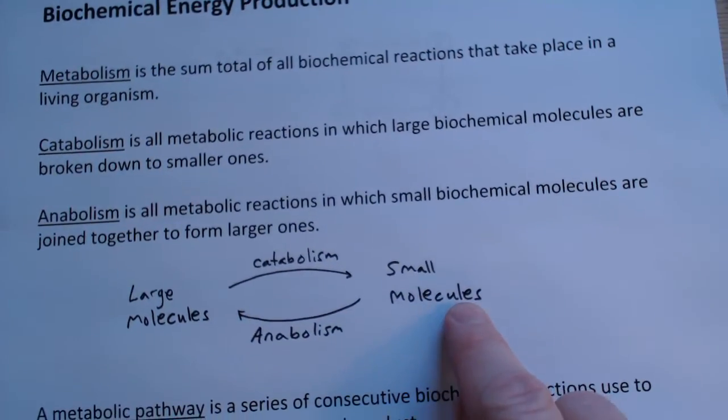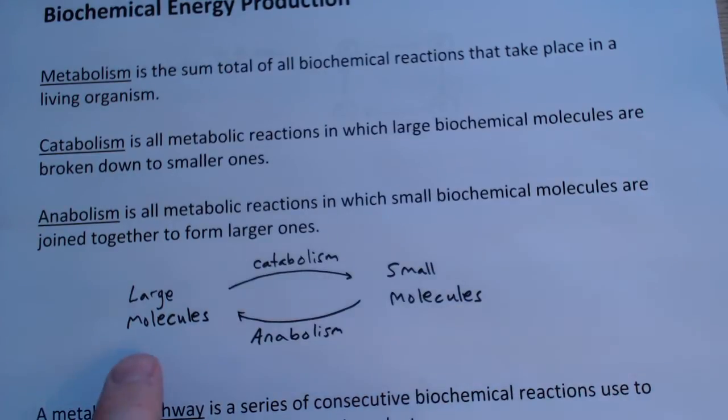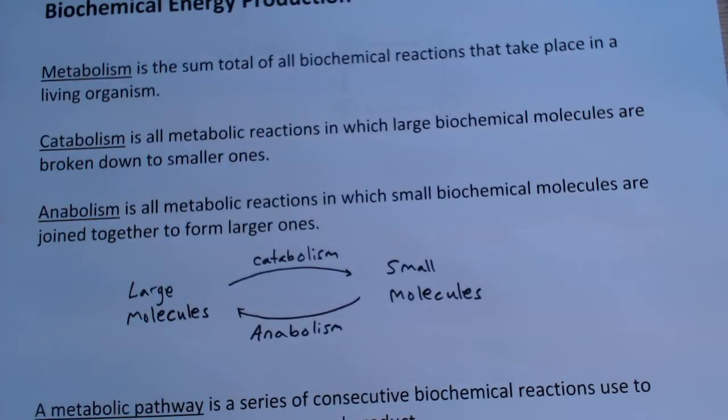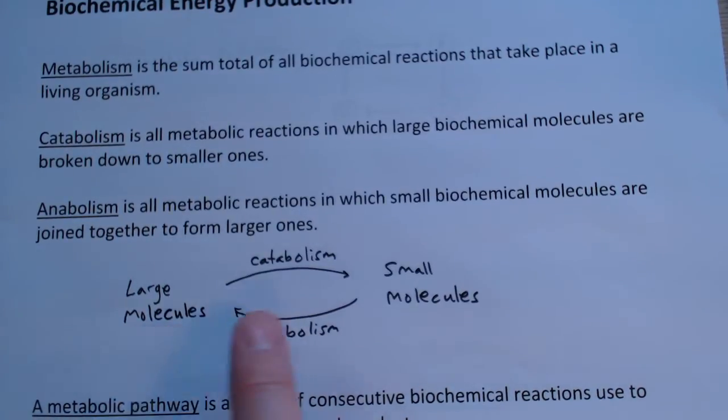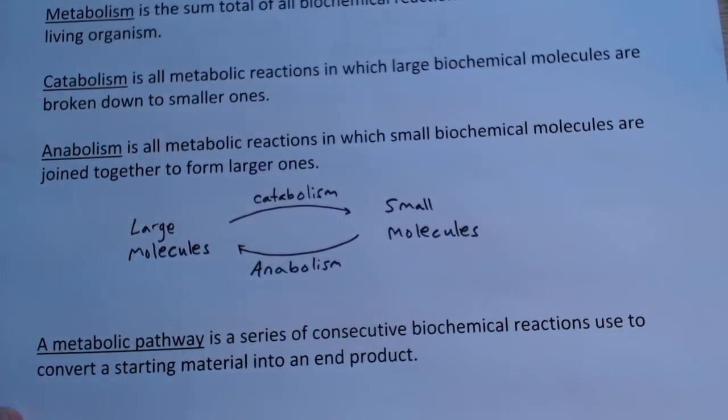The large molecules could be proteins that by catabolism are broken down into amino acids. The small molecules could be fatty acids that are formed up into triacylglycerols. A lot of different possibilities, but just large to small, small to large. A metabolic pathway is a series of consecutive biochemical reactions used to convert a starting material into an end product.